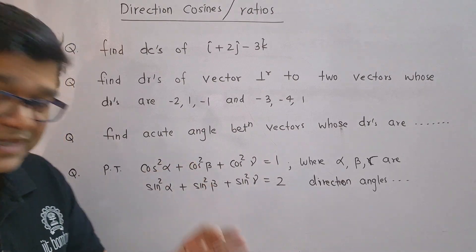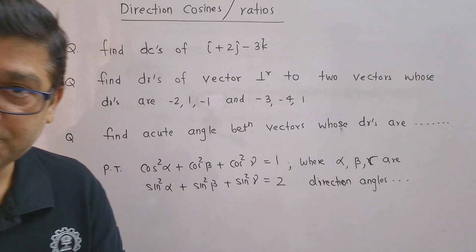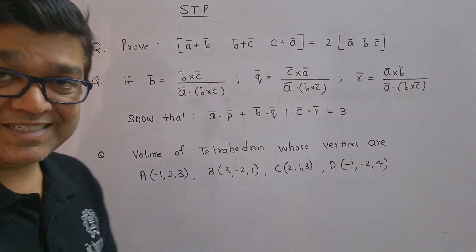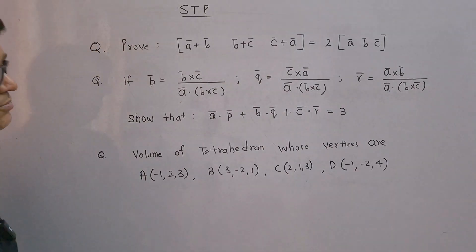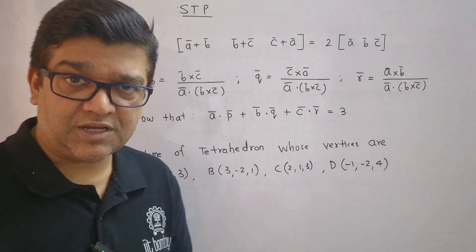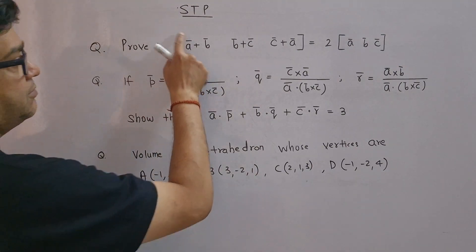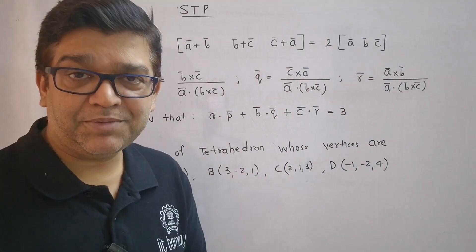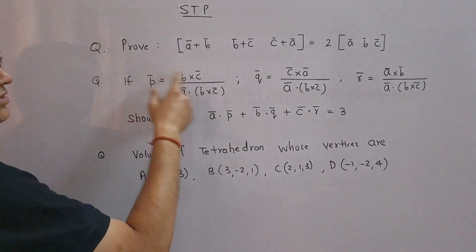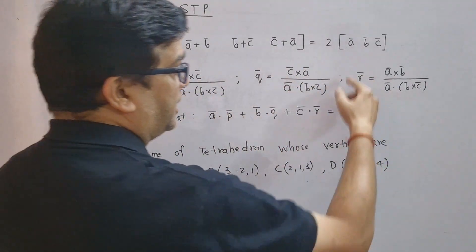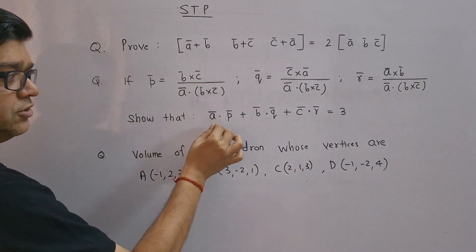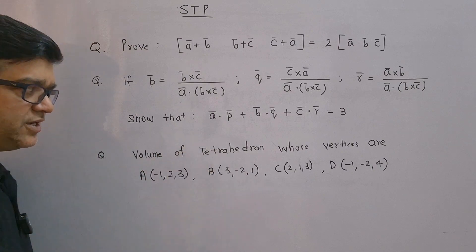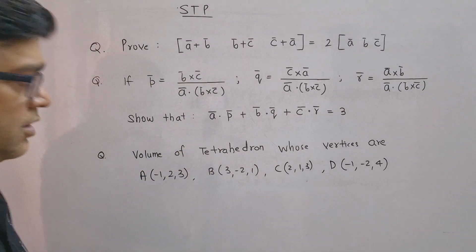The third most important topic is direction cosines and direction ratios. Next important topic is STP — scalar triple product. Most expected questions for HSC board examination 2024 include: prove that box product of (a-bar + b-bar), (b-bar + c-bar), (c-bar + a-bar) equals two times [a-bar, b-bar, c-bar]. Also, given vectors p-bar, q-bar, and r-bar, show that a-bar·p-bar + b-bar·q-bar + c-bar·r-bar equals three times the volume of the tetrahedron.